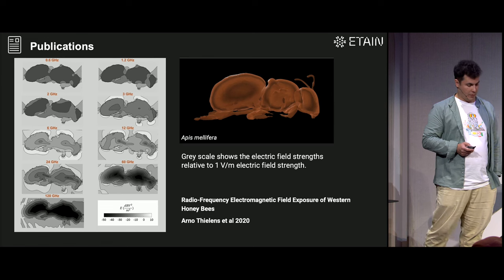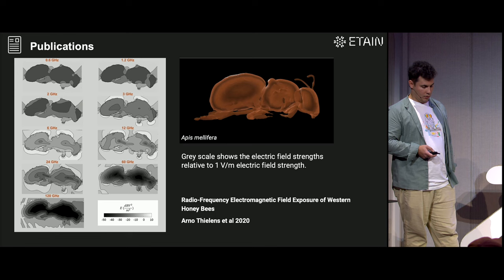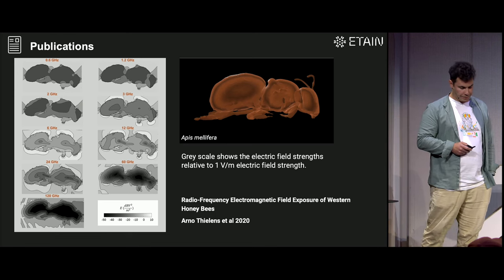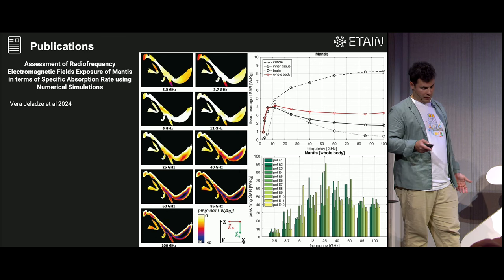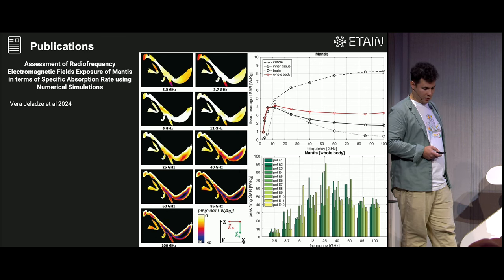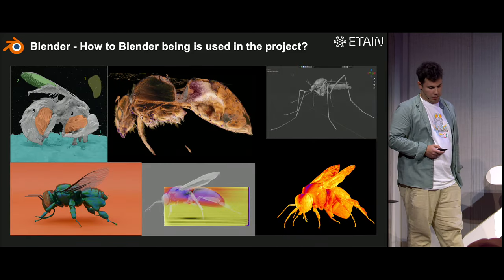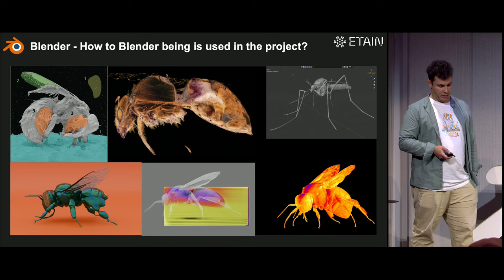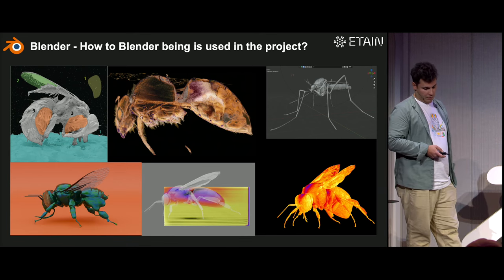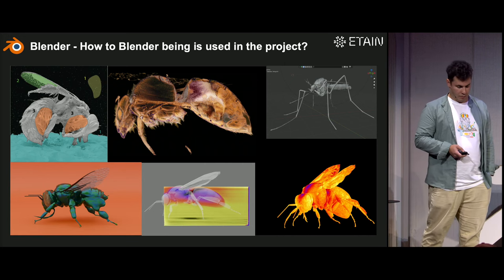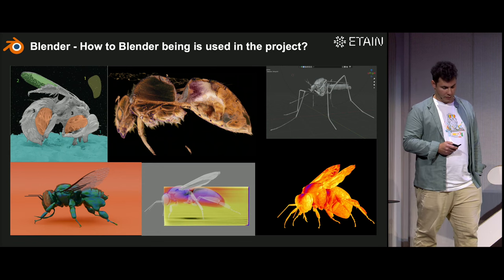Here are some examples from publications — we check different frequencies and see how they look in the models. Another example with a mantis: same approach, trying different frequencies to see the internal field distribution. In summary, we use Blender for cleaning meshes, rendering CT scan volumes, correcting meshes, and visualizing electromagnetic wave data.